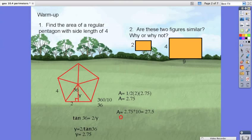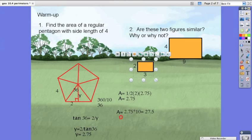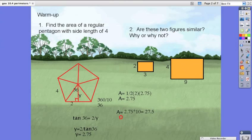So for number two, we have: Are these two figures similar? Why or why not? So if you drop the smaller rectangle, we see the ratio and the size are 2 to 4, which is just double.